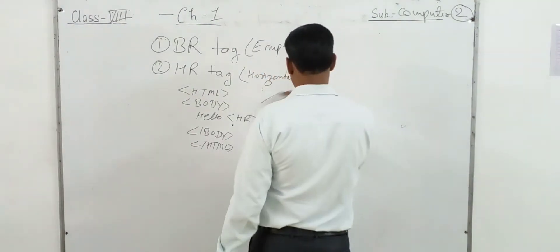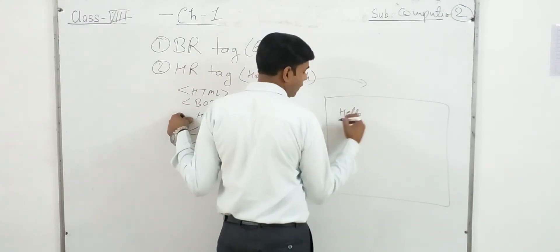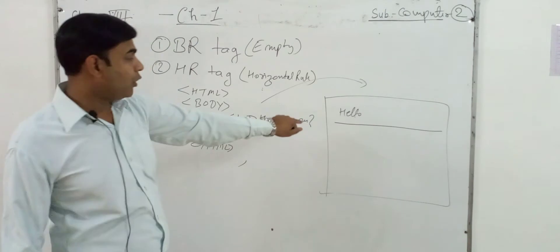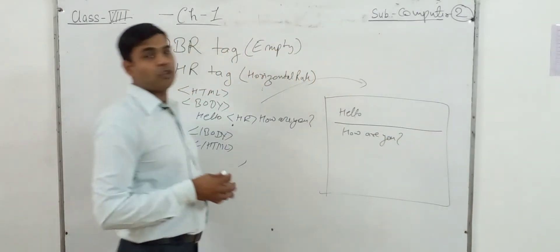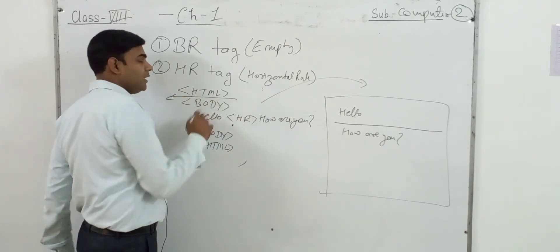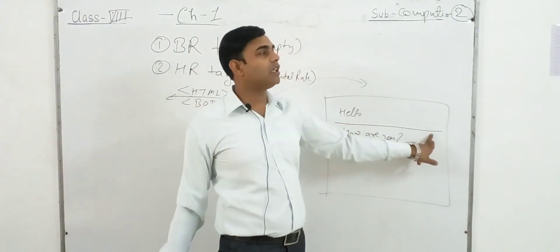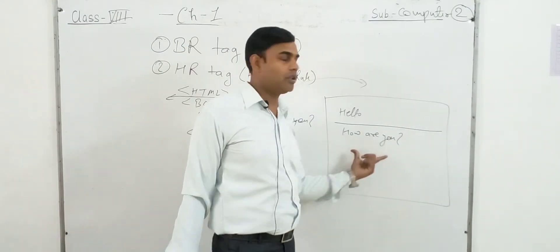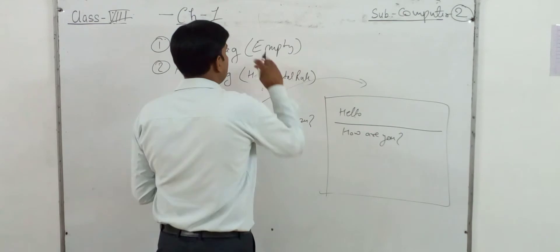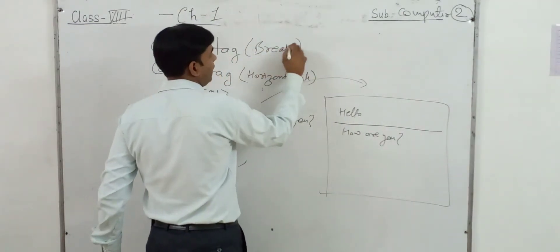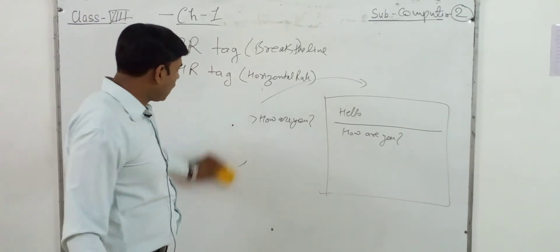When you use the HR tag, the effect is: 'Hello' will appear, then a horizontal line (horizontal rule), and then the next text like 'How are you?' will be shown after the line. So HR gives you a horizontal rule or horizontal line. BR is for break — it breaks the line. HR is for horizontal rule or horizontal line. Both BR and HR are empty elements.